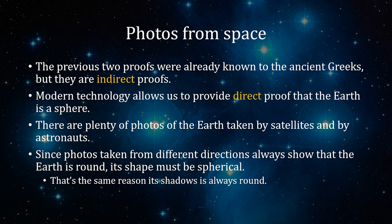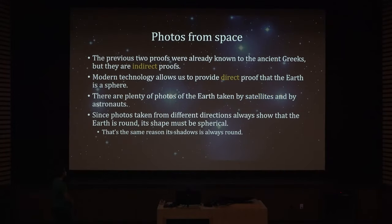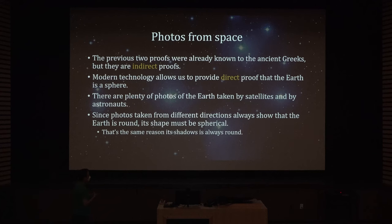These two proofs were already known to the ancient Greeks, but they are indirect. Modern technology allows us to provide direct proof. There are plenty of photos of the Earth taken by satellites and astronauts. Since photos taken from different directions always show the Earth is round, its shape must be spherical — for the same reason that shadows are round if the Earth is a sphere, except here we can actually see the shape of the Earth itself.